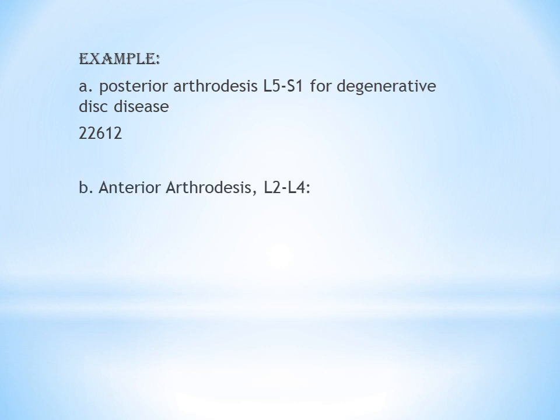Another example: Anterior arthrodesis L2–L4. The approach is anterior, the bones involved are lumbar, and the interspaces are two — L2–L3 and L3–L4. The code for the first interspace is 22584, and for each additional interspace, 22585.